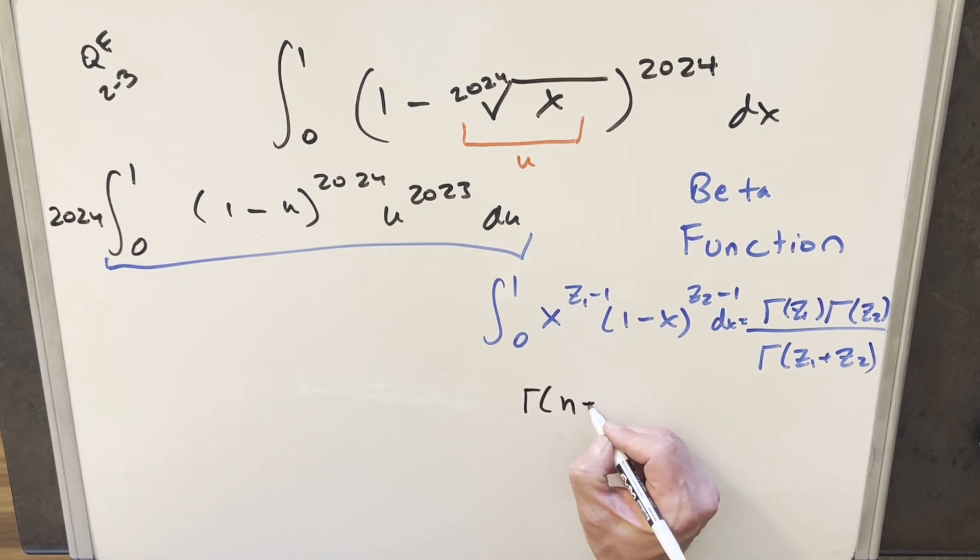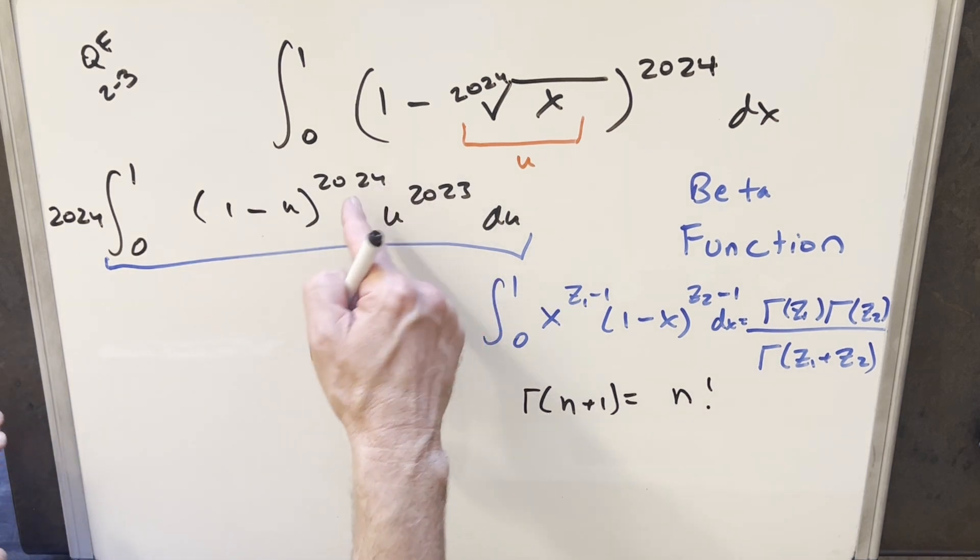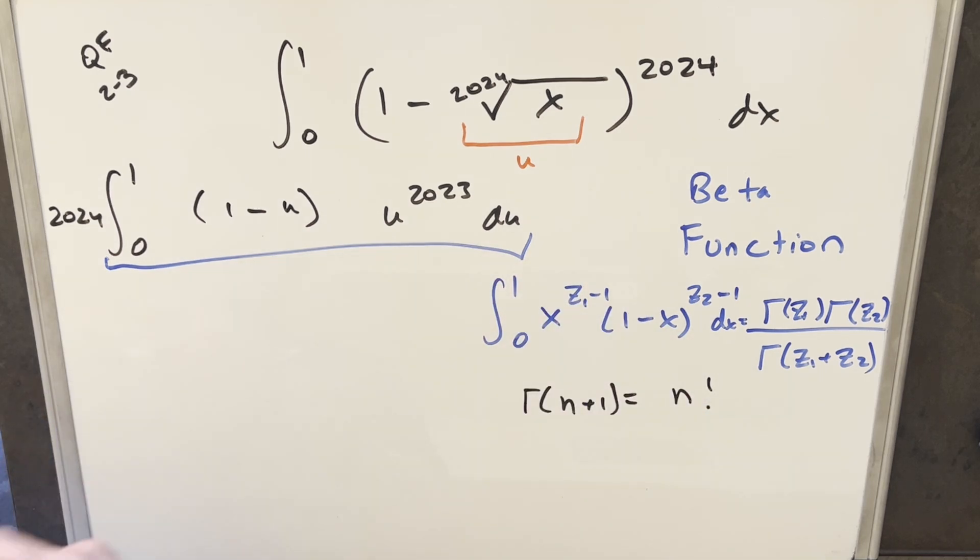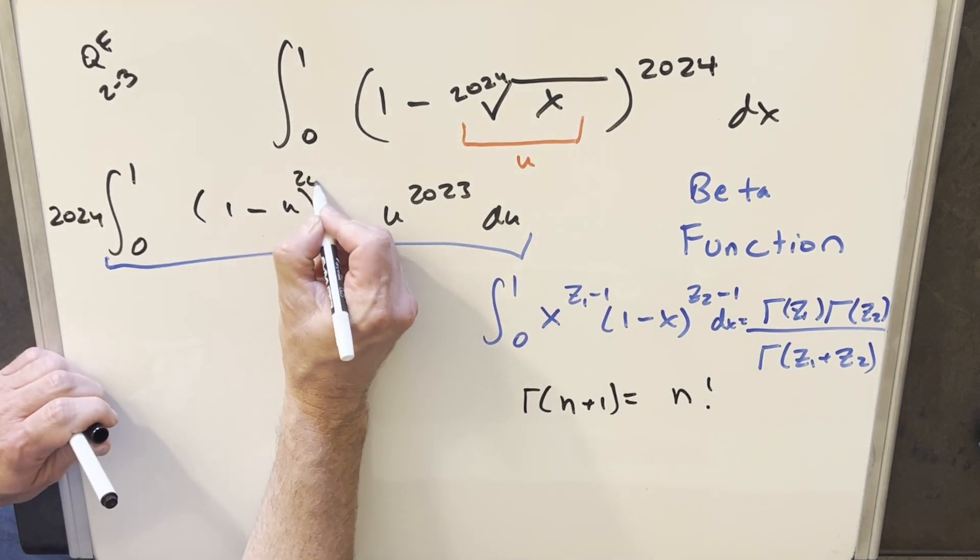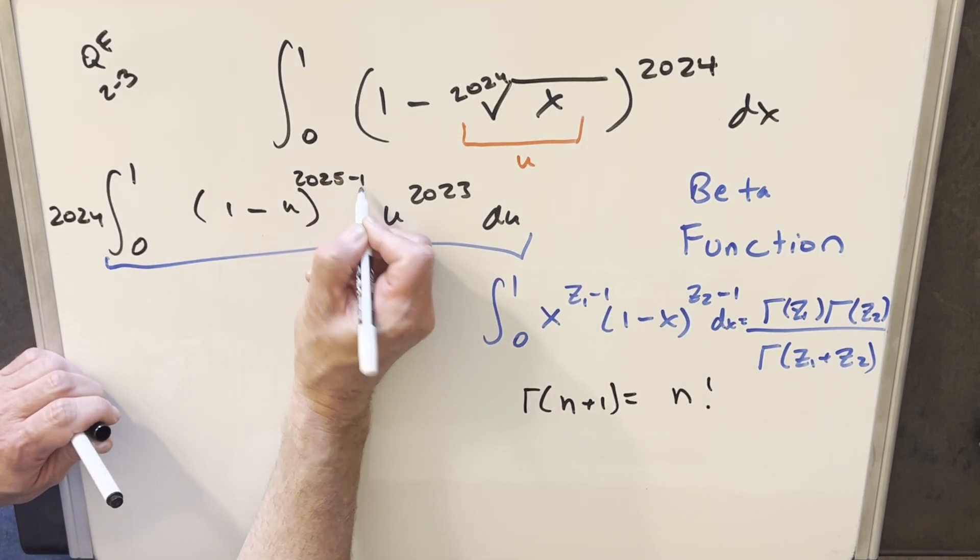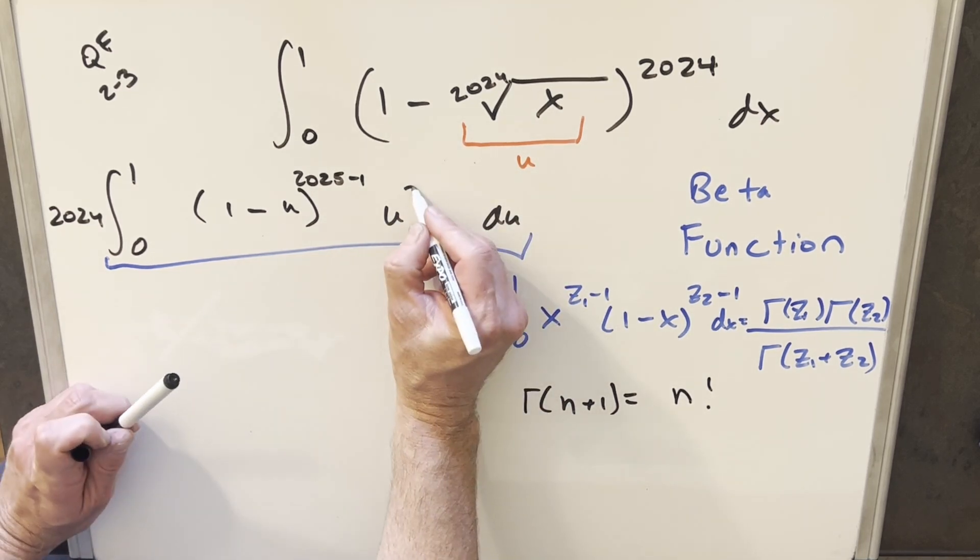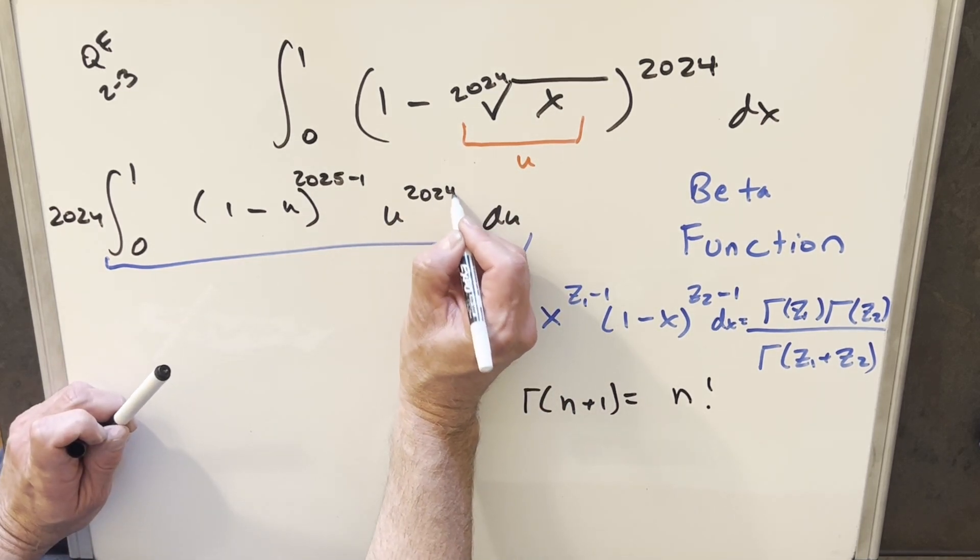So if you have something like gamma of n plus 1, you can calculate this as just n factorial. Now one change I can make in order to make this work: we've got 2024 exponent here. To get it exactly like our formula, I can rewrite this as 2025 minus 1. And then same kind of thing here. I'll write this as 2024 minus 1.